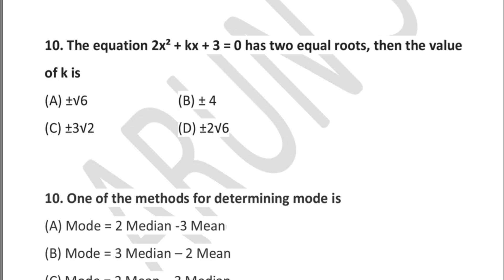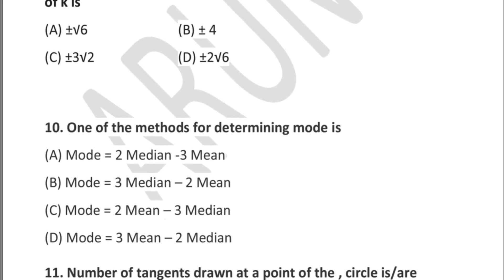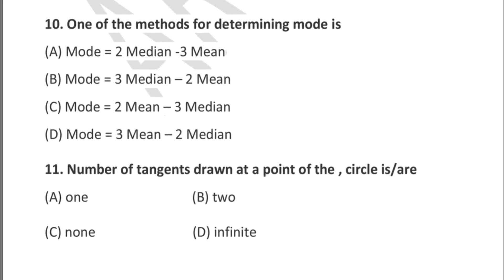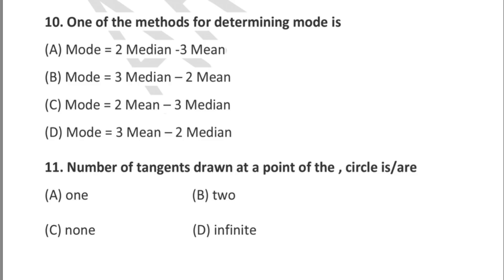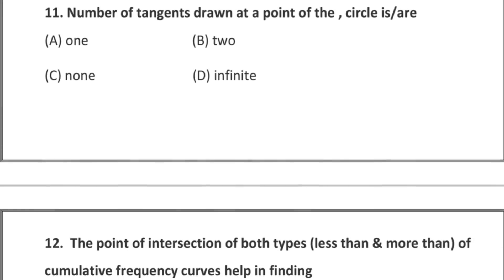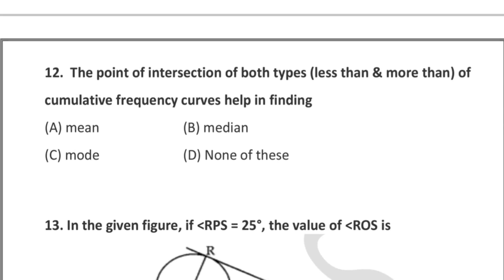There is an extra question with the same question number — you can ignore it or try it out. Question 11: the number of tangents drawn at a point on the circle is — option A: 1, option B: 2, option C: none, option D: infinite.